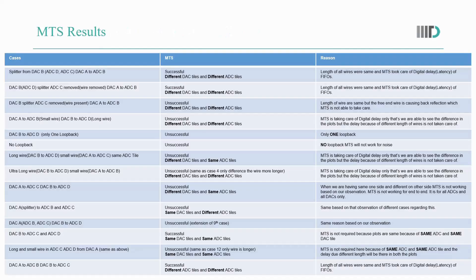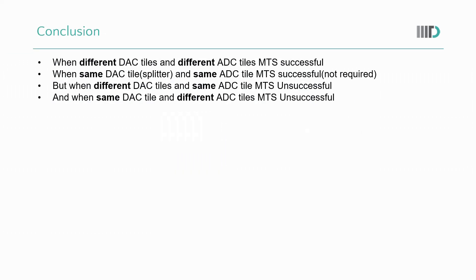These are the MTS results for all configurations along with the reasons for success or failure. The conclusion is: MTS is successful when we have different DAC tiles and different ADC tiles, and also when wires are connected through a splitter to ADCs on the same tile with one DAC — in which case MTS is not even required. MTS is unsuccessful when we have different DAC tiles but the same ADC tile, and also when we have the same DAC tile but different ADC tiles. These last two conclusions are based on observations from the final three configurations.